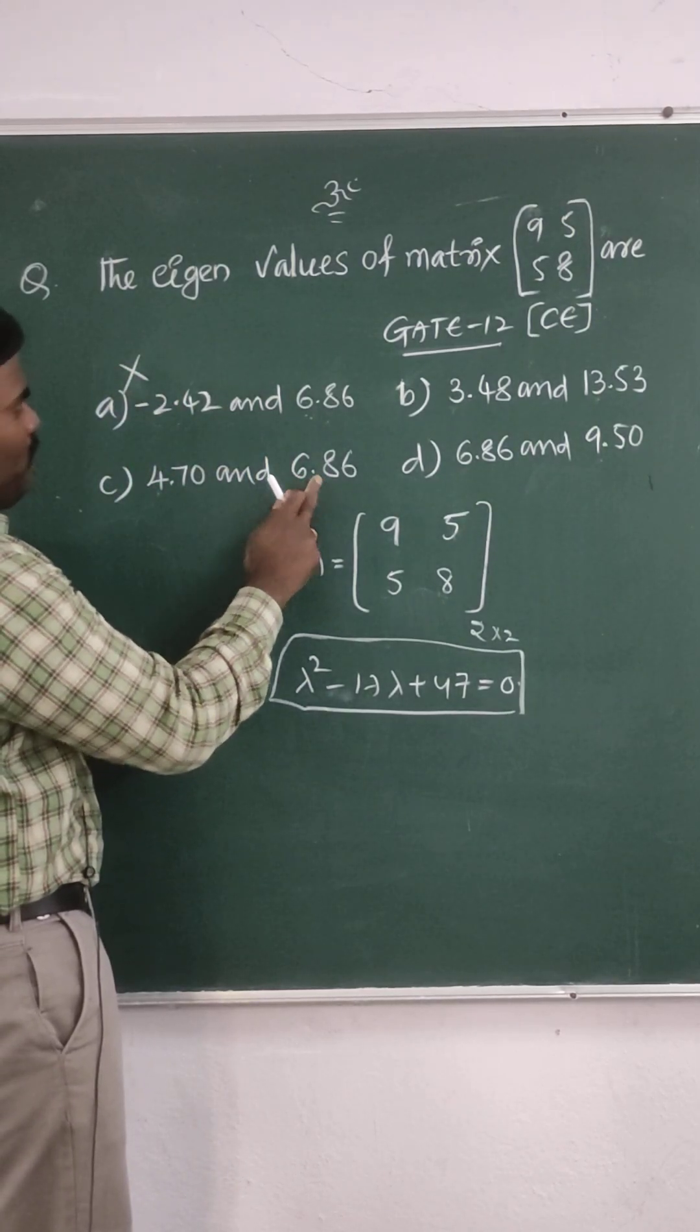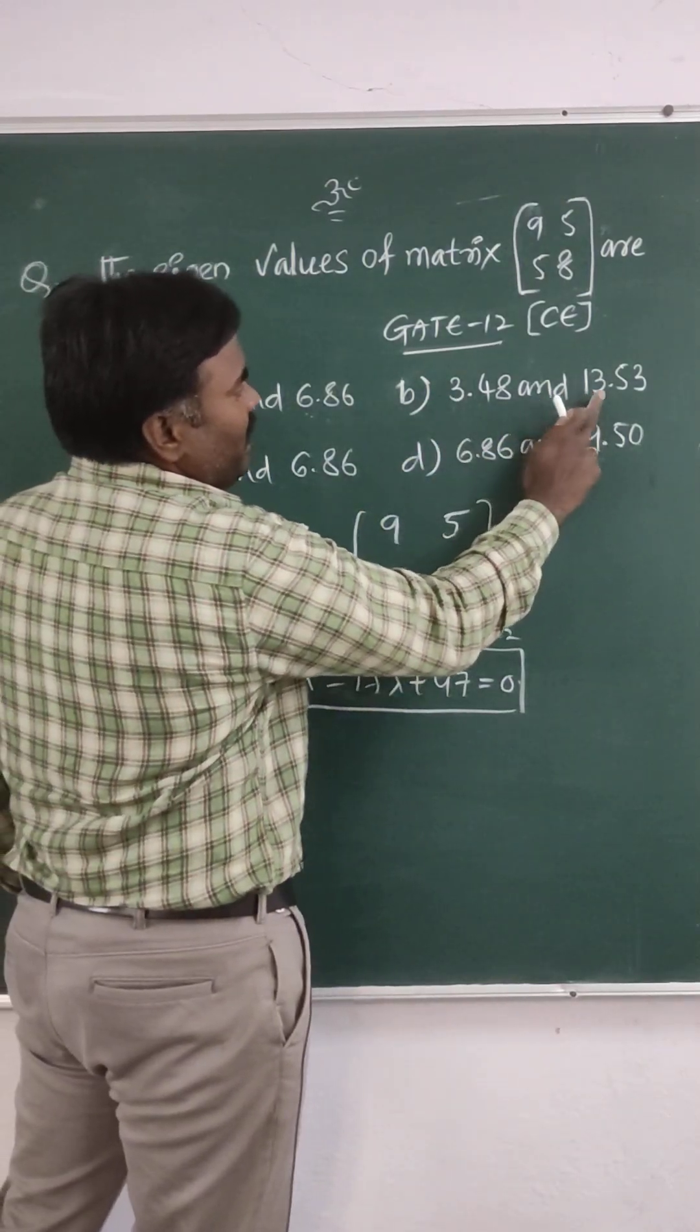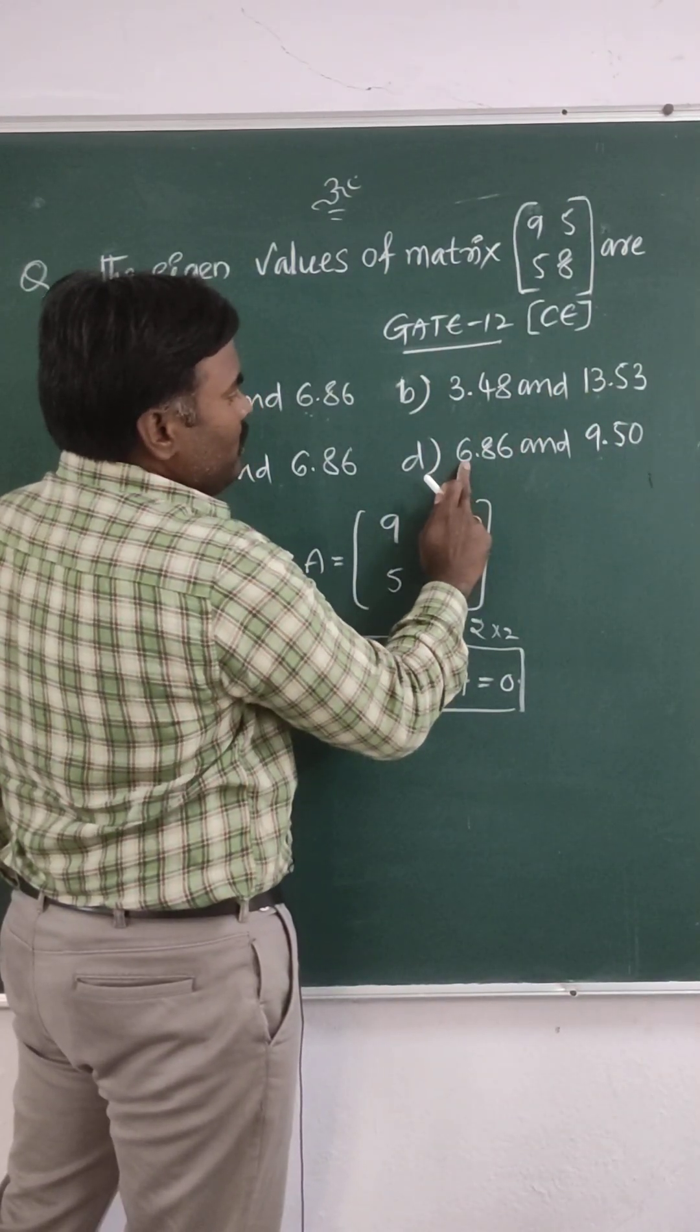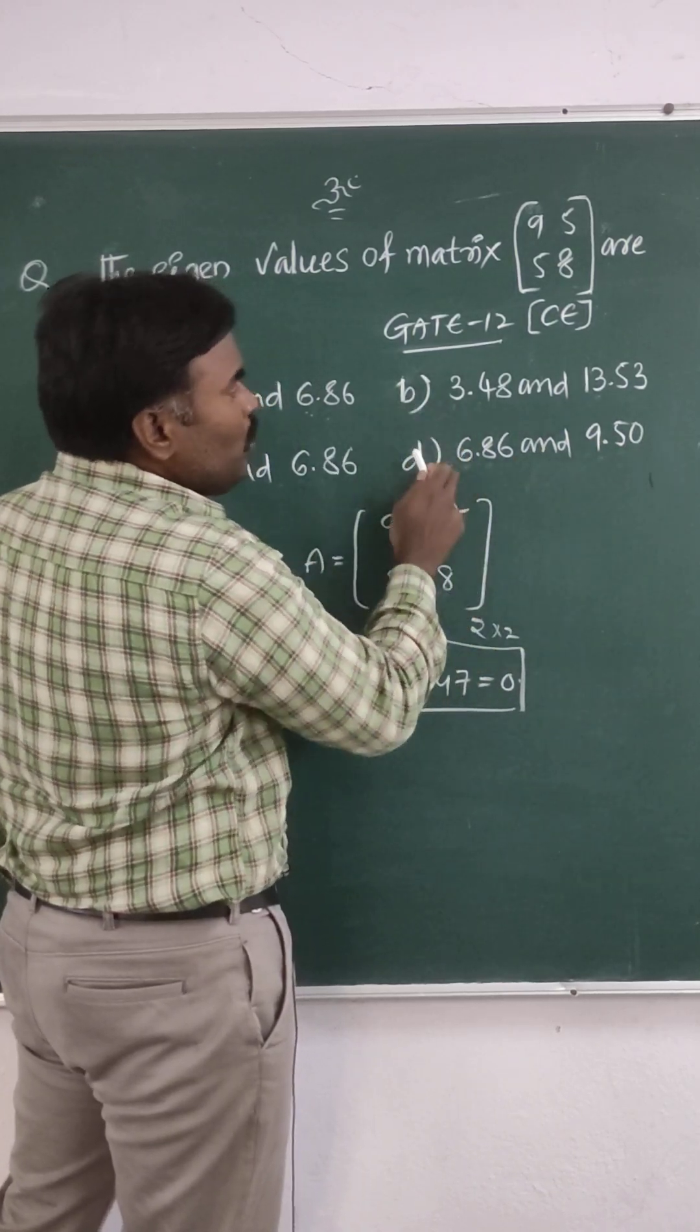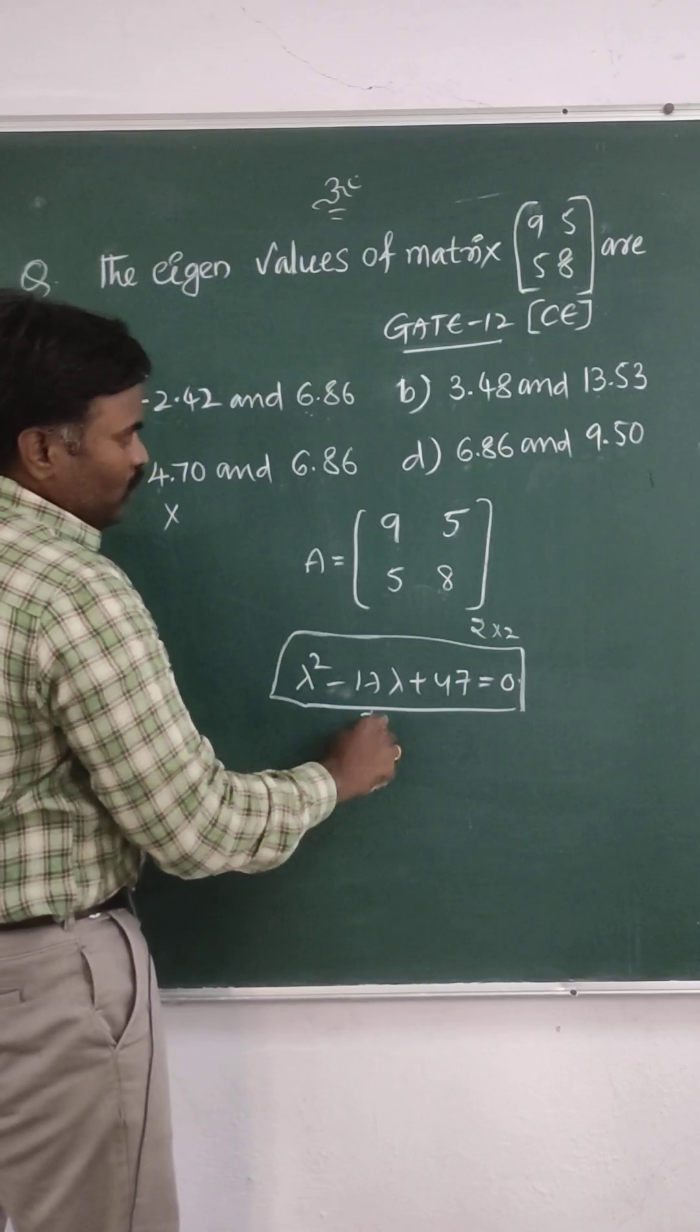4.7 plus 6.86 - not equal to 17. 3.48 plus 13.53 - nearer to 17, so might be this one. 6.86 plus 9.50 - these two are similar to 17. So go for another option.